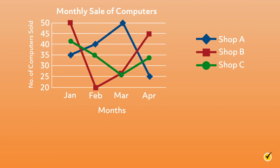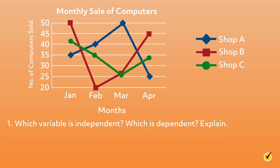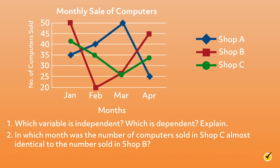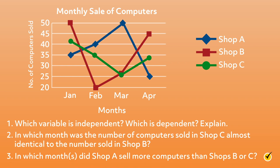I have one last graph for you to analyze. This one is a little more challenging, but I know you can handle it. As you can see, this line graph displays three sets of data. Consider the following questions: Which variable is independent? Which is dependent? Explain. In which month was the number of computers sold in shop C almost identical to the number sold in shop B? In which months did shop A sell more computers than shops B or C? Pause this video, analyze the line graph, and see if you can answer these questions yourself. When you're ready, resume the video and we'll go over the answers together.